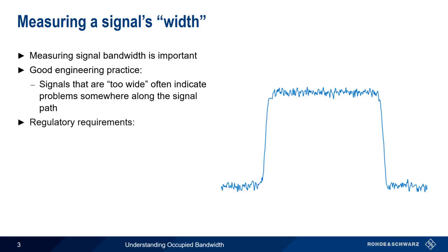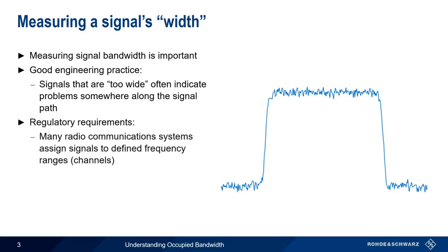Regulatory requirements are another reason why measuring signal bandwidth is important. Many, if not most, radio communication systems assign signals to defined frequency ranges, or channels. Signals whose power extends beyond these limits can cause interference to neighboring signals.